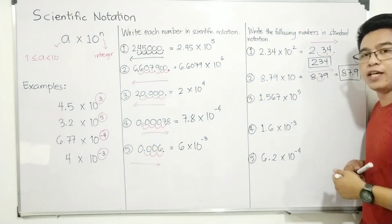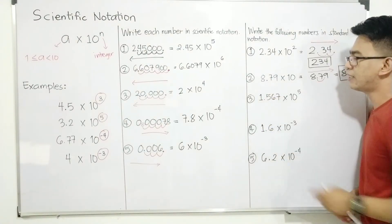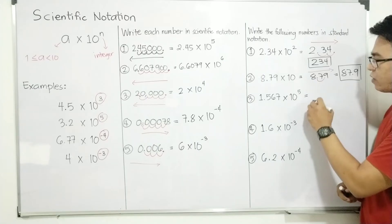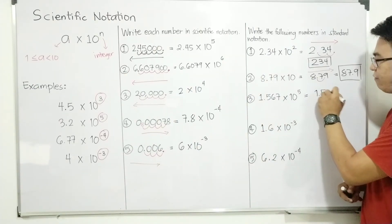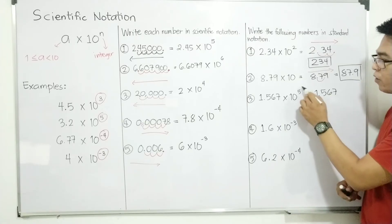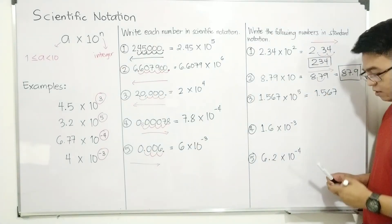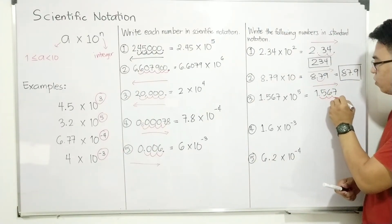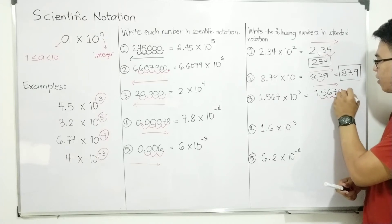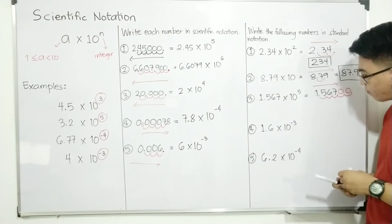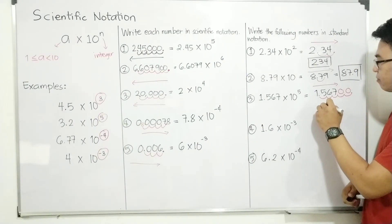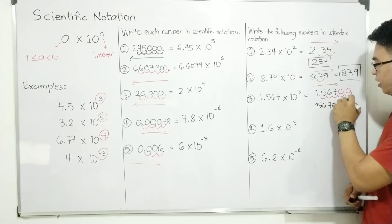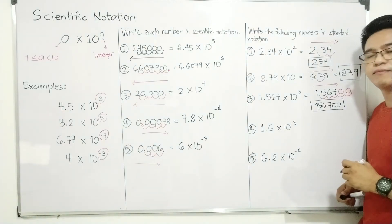Let's proceed with item number 3. We are given 1.567 times 10 raised to the 5th power. You have 1.567 and the exponent is positive 5, so you will move from left to right 5 units: 1, 2, 3, 4, 5 — adding zeros as needed. The answer for item number 3 is simply 156,700. This is the original number.